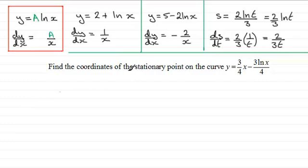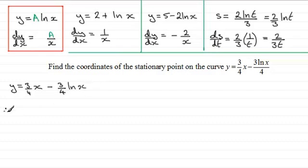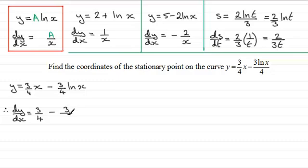So first of all, to get a stationary point, that's where dy/dx equals 0. Writing down the equation: y equals three quarters x, and instead of writing minus 3 times natural log of x over 4, I'll write that as minus three quarters times the natural log of x. Differentiating: dy/dx equals three quarters, and differentiating minus three quarters natural log of x gives minus three quarters times 1 over x, which comes together as minus 3 over 4x.